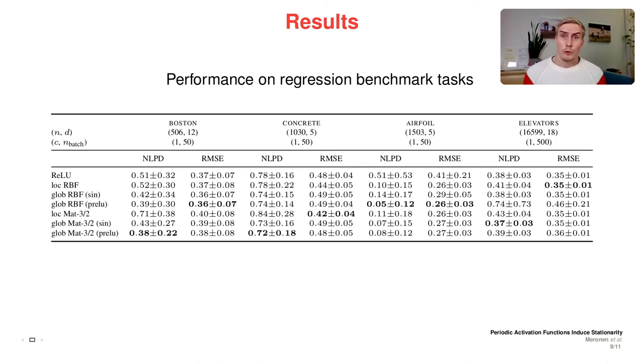We also performed a regression benchmark experiment on UCI regression tasks. For a model to correctly represent uncertainty outside of the training data range on a regression task, the model needs to not only revert to the prior mean, but also revert to the prior variance. For this reason, we expect that the globally stationary models should perform better than the locally stationary model on this experiment. We can see that this actually happens as the best negative log predictive density results for all datasets are achieved by globally stationary models.